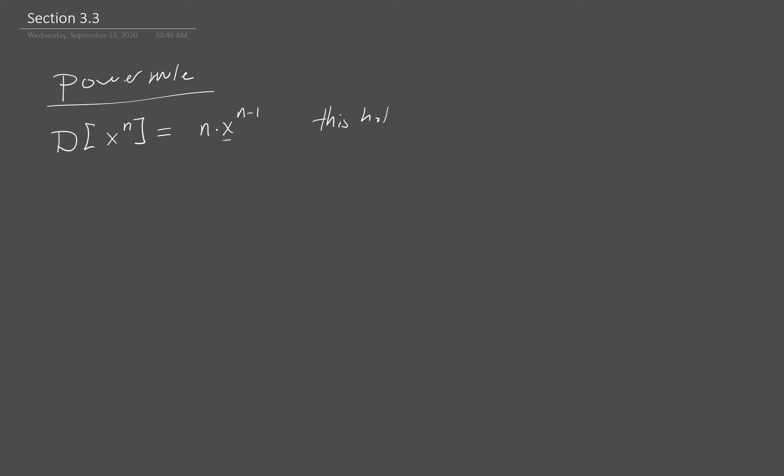There's one caveat here. I don't want this to give me a division by 0, so we have to make sure that this works. This holds for x and n where x to the n and x to the n minus 1 are defined. Sometimes it might not work for negative x values if I've got like a half up in my exponent, so I have to make sure that this is well defined. We just say it only works where it is defined.